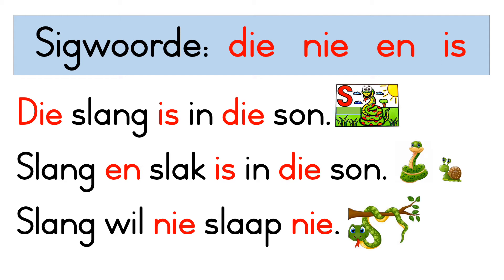Now we look at our sight words. Nou kyk ons na ons sigwoordkies. Our first sight word in Afrikaans is die. Die. And then the next one is nie. Nie. En. En. And is. Is. Right, now I've put all the sight words in red for you.